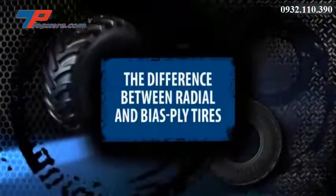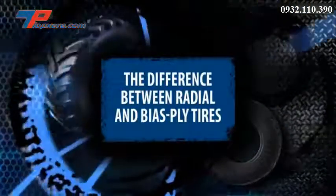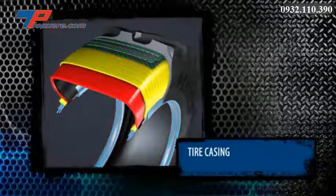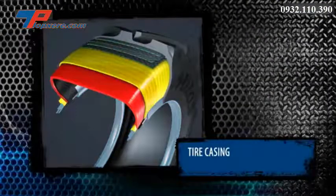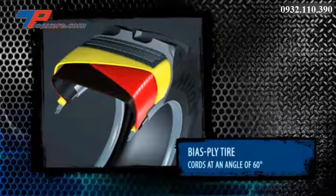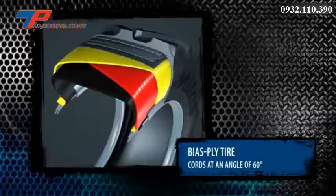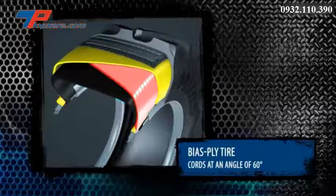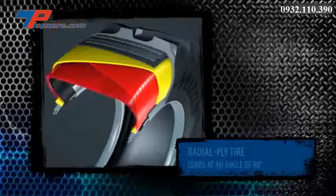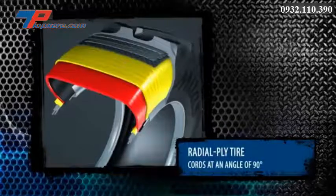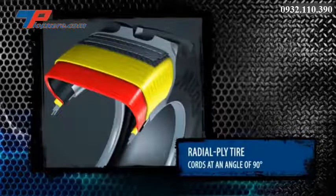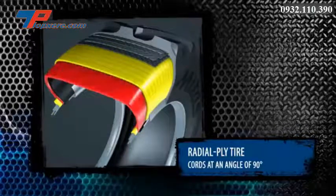There are two kinds of tires: older bias ply tires and newer radial ply tires. In a bias ply tire, the cord is laid at an angle of 60 degrees relative to the tire's movement, and successive plies are laid at opposing angles, forming a crisscross pattern. In the radial ply tire, the cord in the casing ply is laid at a right angle to the center of the tread.